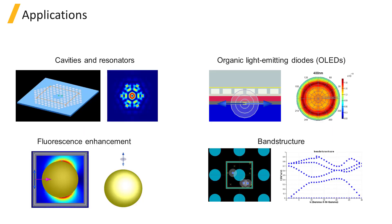This slide shows some applications where dipole sources are used. Dipole sources can be used to excite modes of cavities or resonators, or represent point sources such as the spontaneous emission in organic LED devices. They can also be used to represent a fluorophore to simulate fluorescence enhancement since the decay rate of a fluorophore can be related to the power radiated by a dipole.